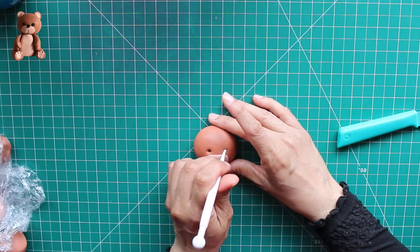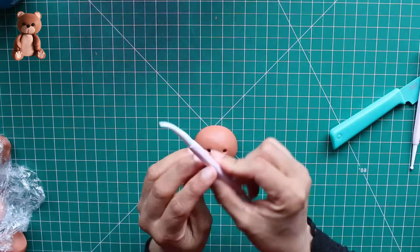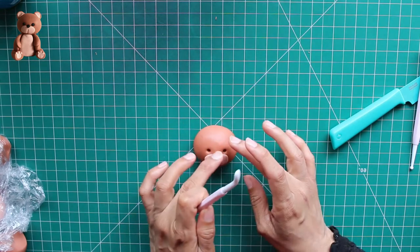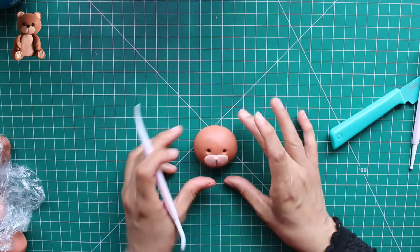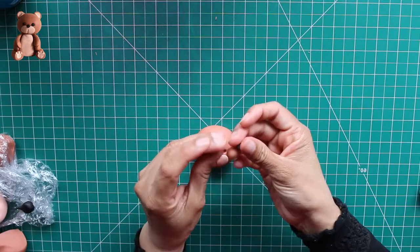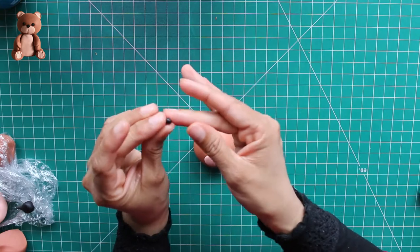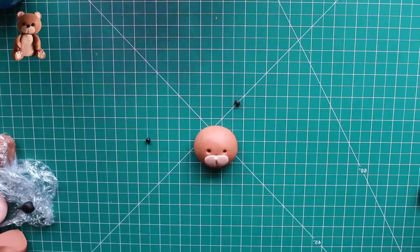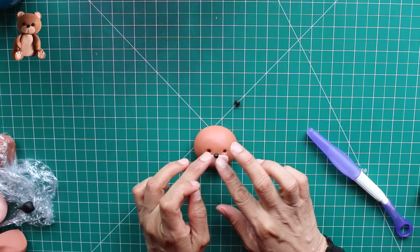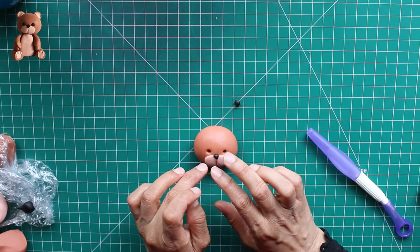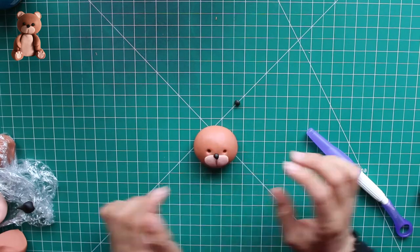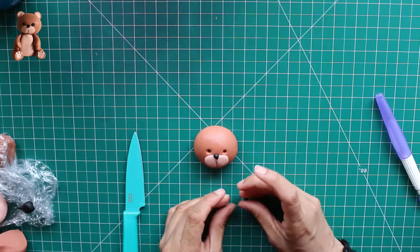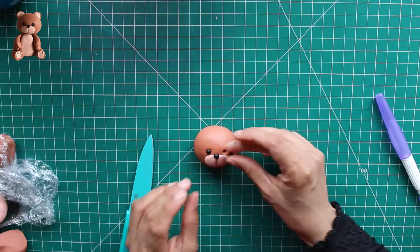So I'm using a ball tool here to make the holes for the eyes. But if you don't have any of these tools, you can definitely use the back of a paintbrush or some toothpick to make these features. Now taking the black gum paste, rolling it into a small ball and then just pressing the sides to make it sort of like a triangular shape for the nose. And the two small balls for the eyes. I will stick everything together with some water.